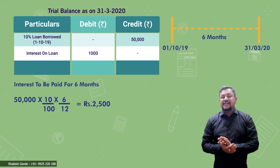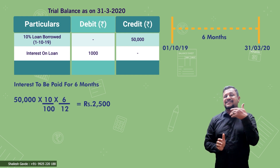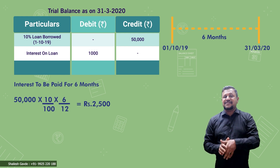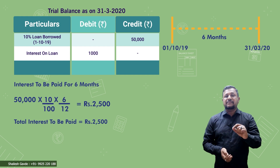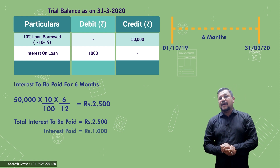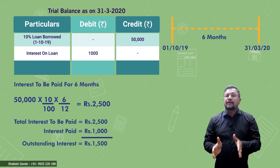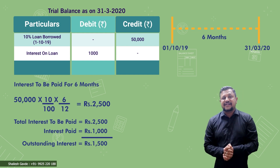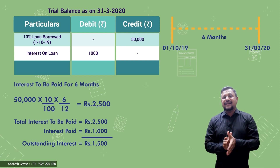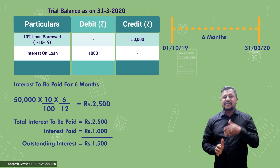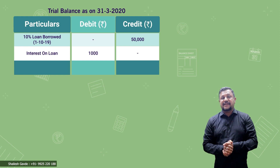Now we check how much interest we have paid this year. Referring to the trial balance, interest on loan is given as 1,000, meaning we had to pay 2,500 in total but only 1,000 has already been paid. So outstanding interest is 1,500. This adjustment therefore becomes: outstanding interest on loan to be paid — 1,500.